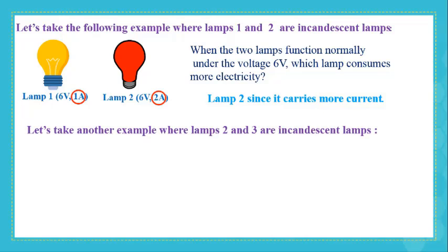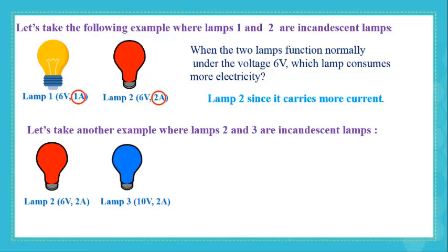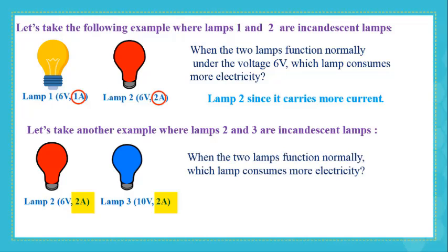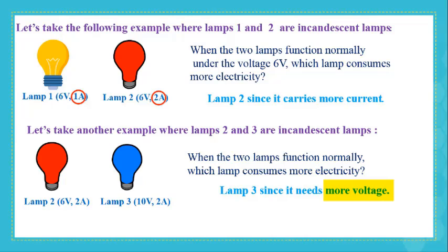Let's take another example where lamps 2 and 3 are incandescent lamps. Both lamps carry the inscription 2 amperes. But when they function normally, which one consumes more electricity? Lamp 3. Why? Because it needs more voltage than that needed by lamp 2.